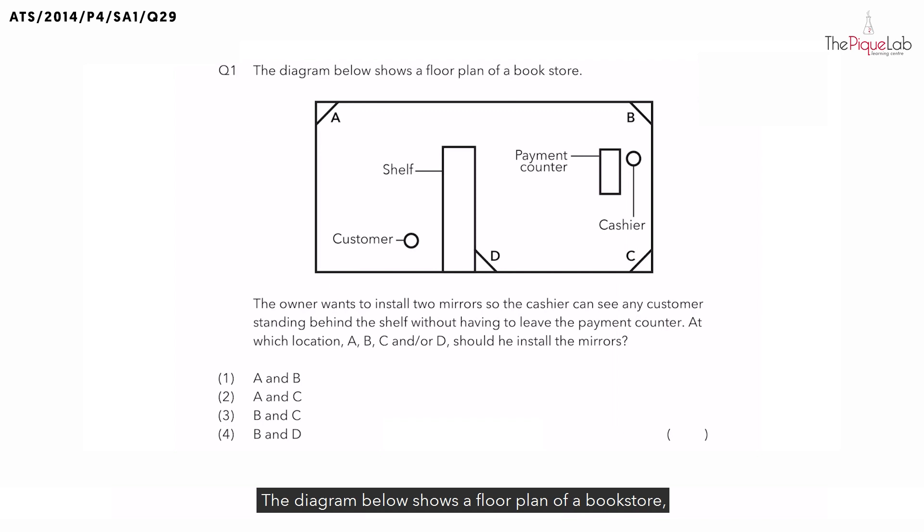The diagram below shows a floor plan of a bookstore and the owner wants to install two mirrors so that the cashier is able to see any customer standing behind the shelf without having to leave the payment counter. At which locations A, B, C or D should he then install the mirrors?